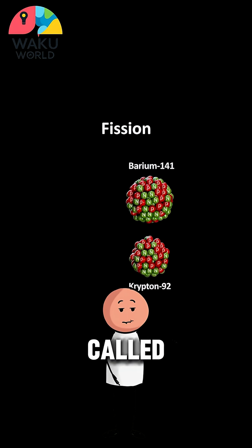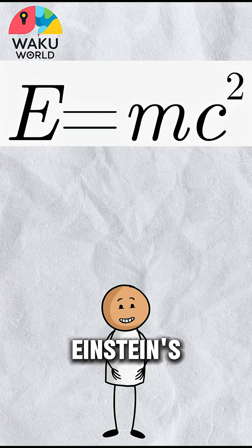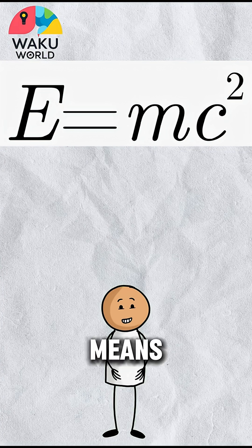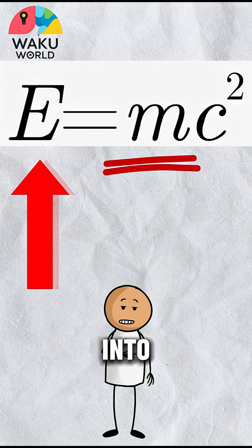You might have seen this famous equation somewhere. That's Einstein's big idea. It means that a tiny bit of matter, that's the M, can turn into a huge amount of energy, that's the E.